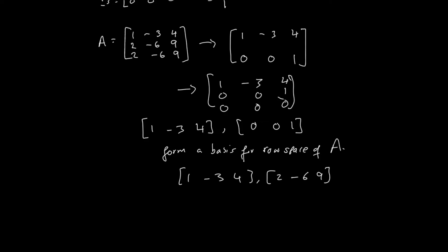For the column space, we can find a basis by looking at the leading ones. So the vectors (1, 0, 0) and (4, 1, 0) form a basis for the column space of A. So now we've basically found the basis sets.